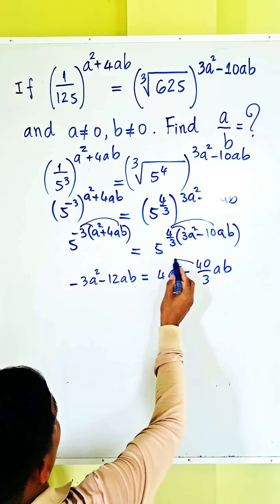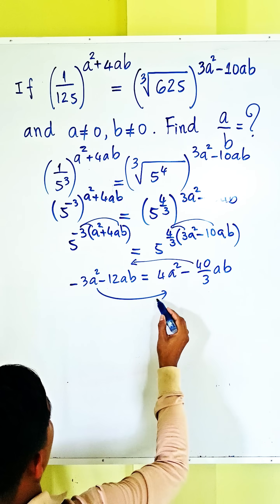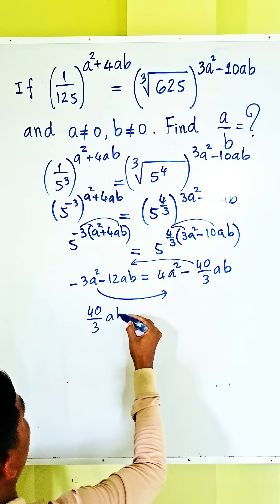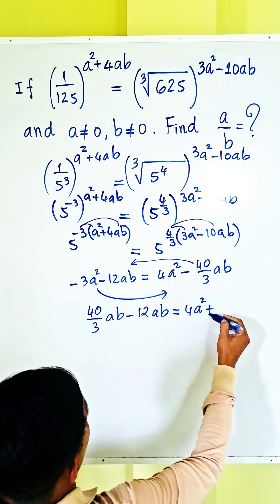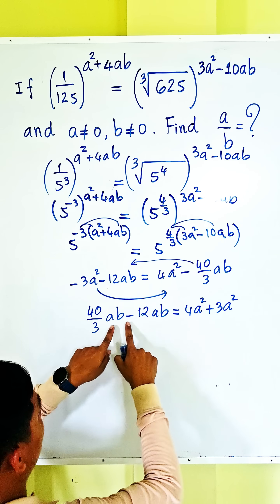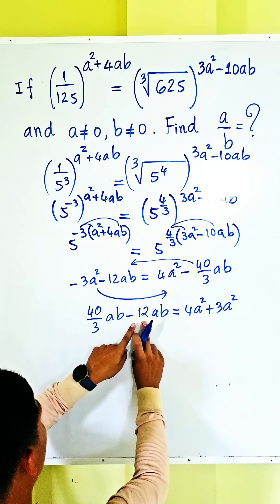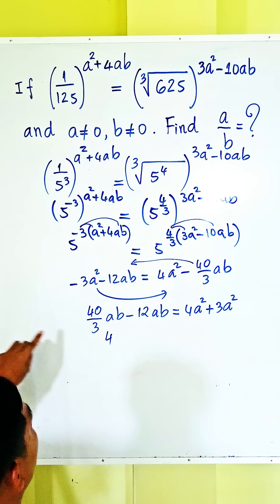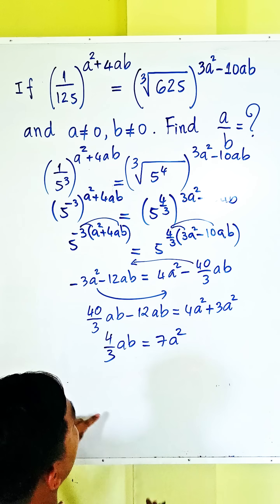We move the (4/3)ab term to the left side and 3a squared to the right side, giving us (4/3)ab minus 12ab equals 4a squared plus 3a squared. Combining like terms on the left — evaluating (4/3) minus 12 — and simplifying the right, we get (4/3)ab equals 7a squared.